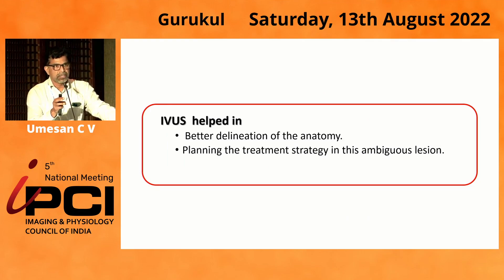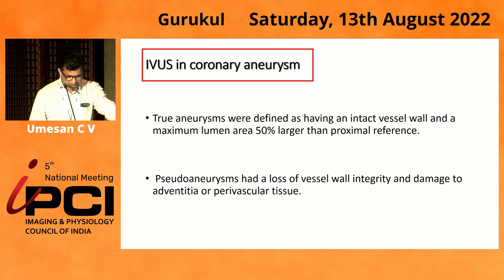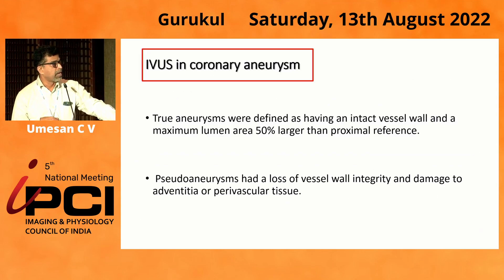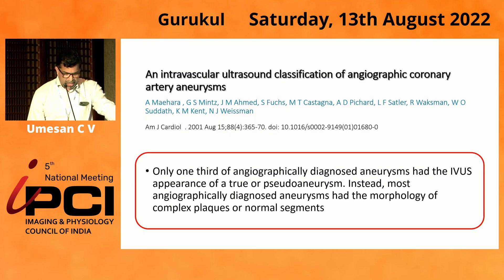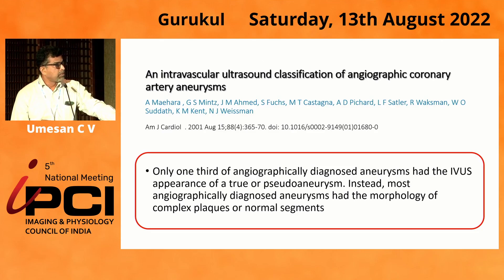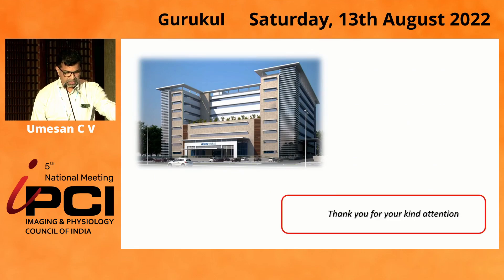IVUS helped us better delineate the anatomy and plan the treatment strategy in this ambiguous lesion. Intravascular imaging is an important modality in lesions like this. This is from the Gary Mintz group, who studied intravascular ultrasound in angiographic coronary aneurysms. They found that true aneurysms are identified as vessel diameter 50% larger than the proximal reference, while pseudo-aneurysms show loss of vessel wall integrity. In our patient, we had a true aneurysm. Importantly, only one-third of angiographically apparent aneurysms had the IVUS appearance of true or pseudo-aneurysm. Thank you for your kind attention.